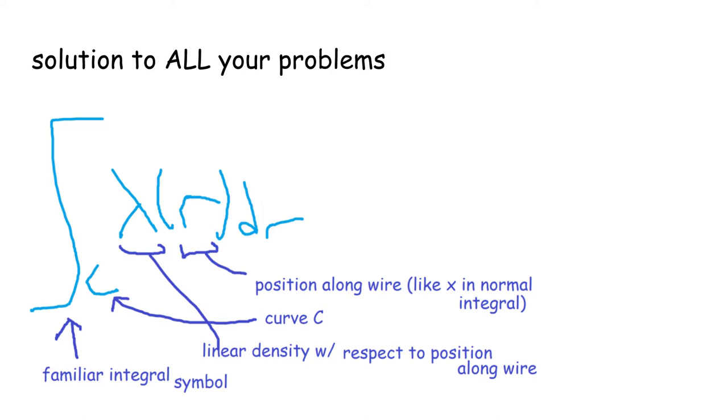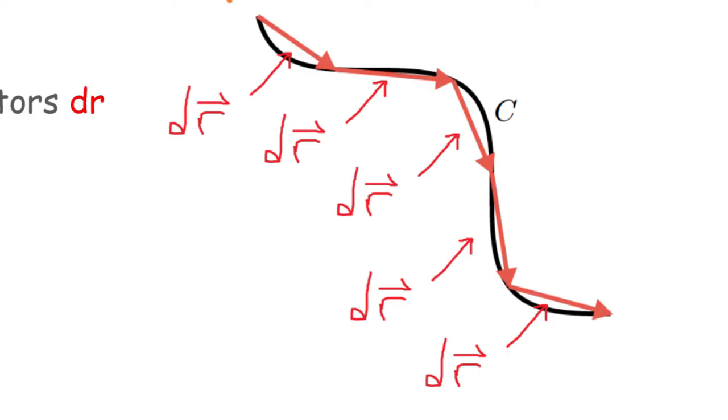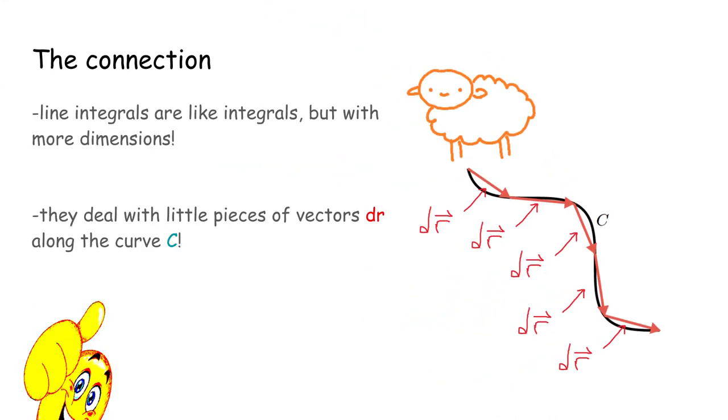Then, the integrand has the linear density with respect to the position along the wire, and we're multiplying that with dr. Like the integrals we've dealt with in class, you can imagine dr as infinitely tiny pieces of vectors along the curve C. This makes line integrals like definite integrals, but with more dimensions.